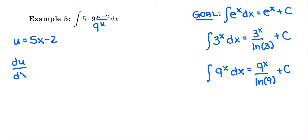So then du dx, the derivative of that, derivative of 5x minus 2 is just 5. And then we need to multiply by dx.